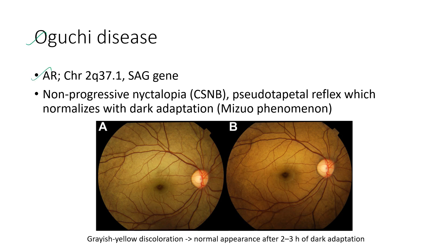Next is Oguchi disease. It is an autosomal recessive condition characterized by non-progressive nyctalopia — congenital stationary night blindness — with a pseudo-tapetal reflex that normalizes with dark adaptation, known as the Mizuo phenomenon. Two fundus images depict the Mizuo phenomenon: grayish-yellow discoloration that becomes normal after two to three hours of dark adaptation.